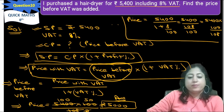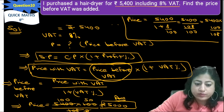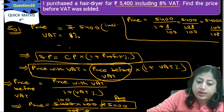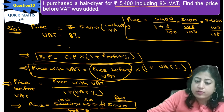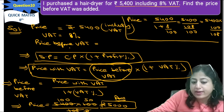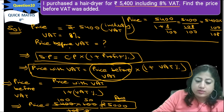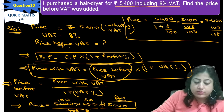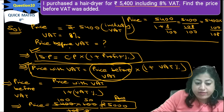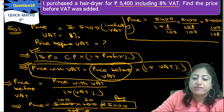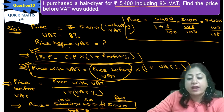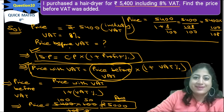You will just write price including VAT and price before VAT — not SP and CP. Using the formula: price with VAT equals price before VAT multiplied by (1 plus VAT percent). Just put the values in this formula and you will get the answer. Thank you so much.